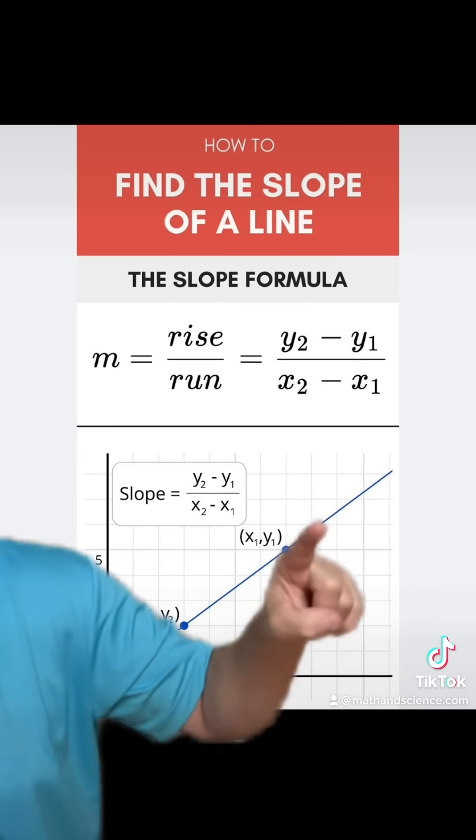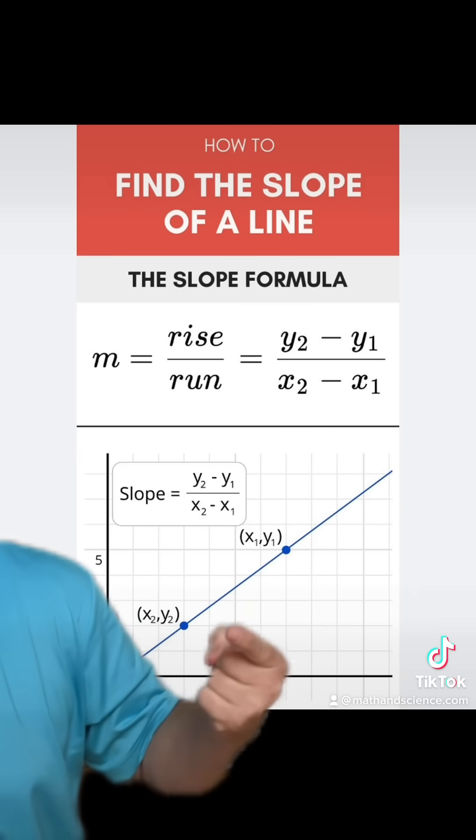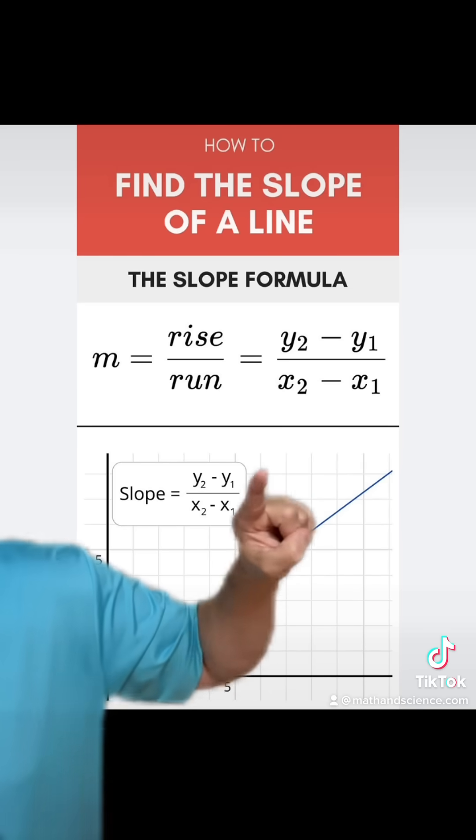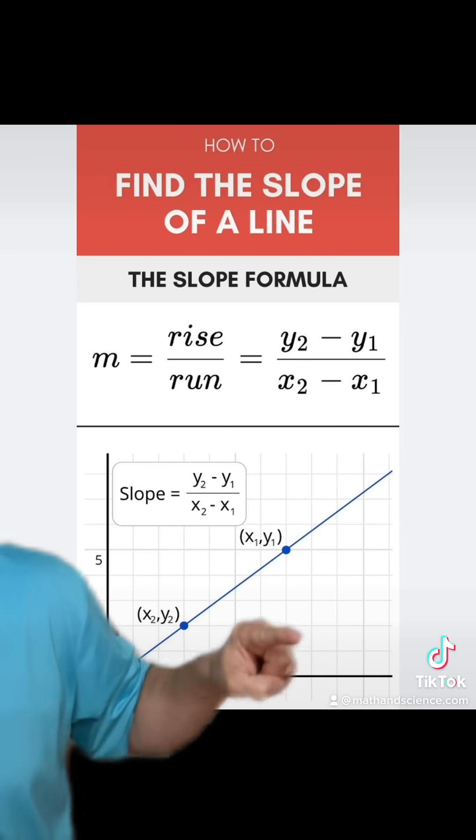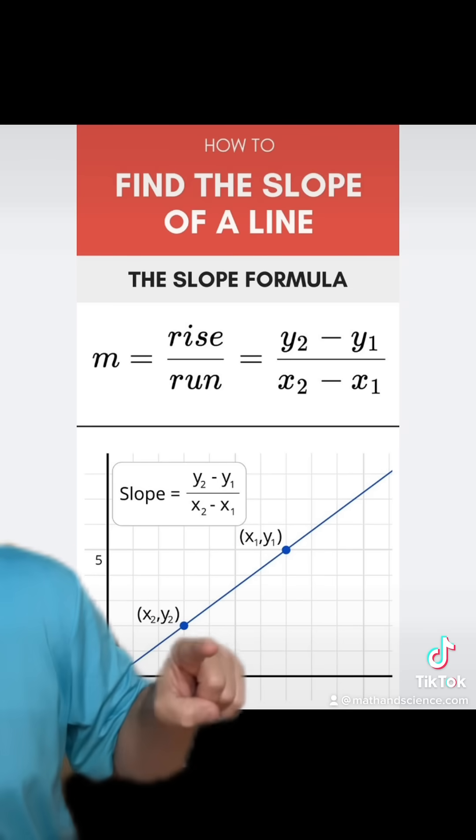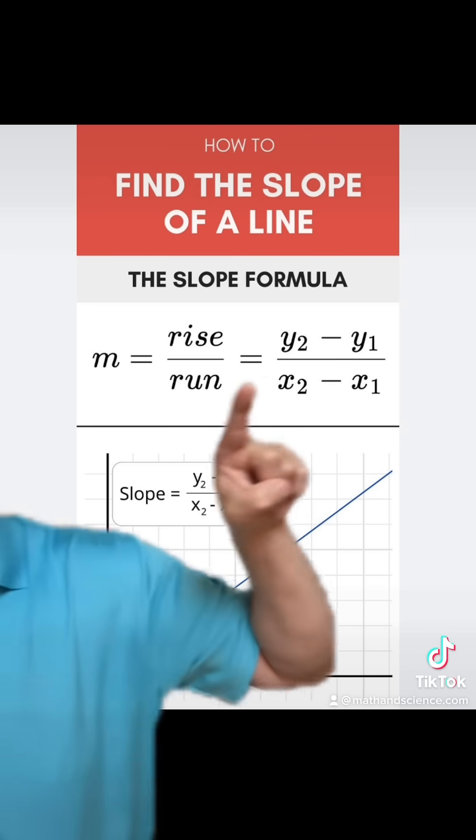So you learn that you have a line and you have a point on a line here and a point on a line here. And you can get a number called the slope of this line by subtracting the y values, that's the rise, and then subtracting the x values, that's the run. And you called it dividing rise over run.